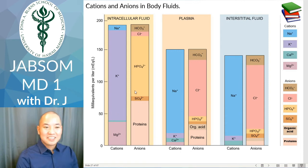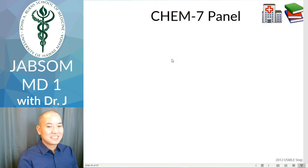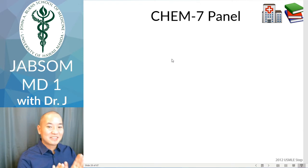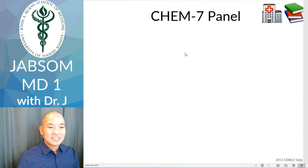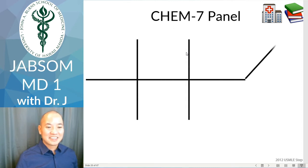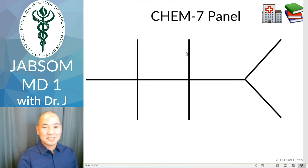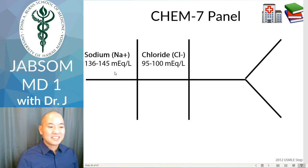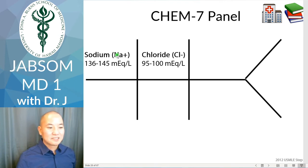So why are we talking about all these ions and solutes? Let's look at the CHEM7 panel — a standard blood test you'll get very familiar with. Let's draw the fishbone right here. Sodium and chloride go side by side, just like in our example. Sodium and chloride are a pair.